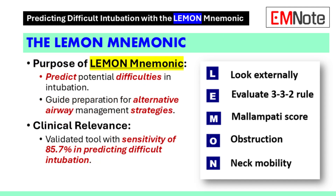In conclusion, the LEMON mnemonic provides a clear framework for assessing the airway before intubation. Each component offers specific guidance to evaluate the risk of complications. Healthcare providers should use this structured approach to enhance patient safety and improve outcomes. By focusing on measurable criteria and observable signs, providers can better anticipate and address airway management challenges.